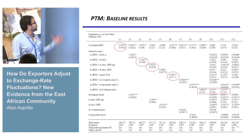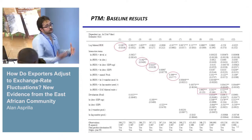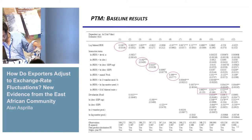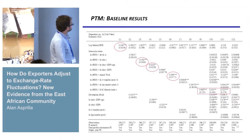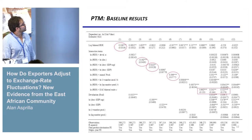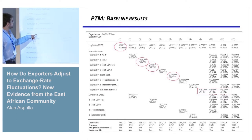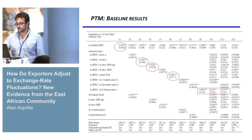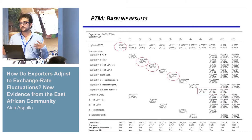The baseline results for the whole sample replicate the previous literature: a pricing-to-market coefficient around 0.1 without interaction terms. We reproduce interactions between the real exchange rate and country-level variables and find the expected results. The most important finding is the dummy for bilateral trade within the East African Community: we find significantly more pricing to market for intra-EAC trade, which is evidence of imperfect competition within the EAC market.